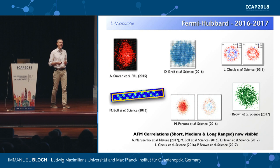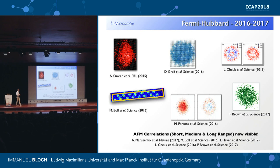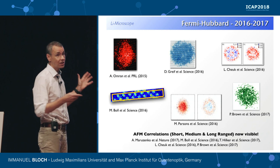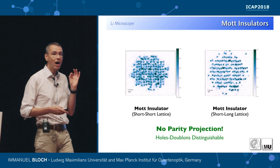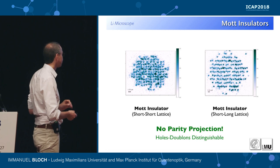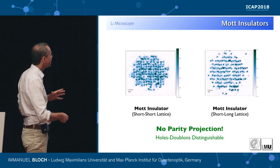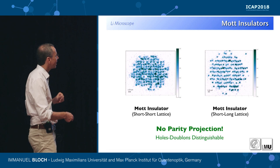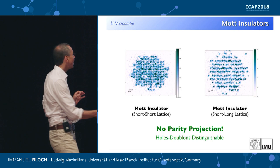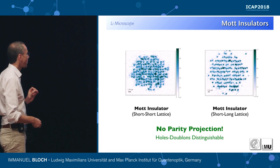The last years have seen a tremendous development of these techniques towards Fermi gases and applying this concept to the Fermi-Hubbard model problem. I want to concentrate on our setting and describe how we measure the system. We can have two types of lattices: a short-spaced lattice with 1.5 micrometers in each direction, or a short-long-spaced lattice with 1.5 and 1.15 micrometers, and twice the lattice spacing in the vertical direction. This long-short lattice configuration gives us certain detection advantages.